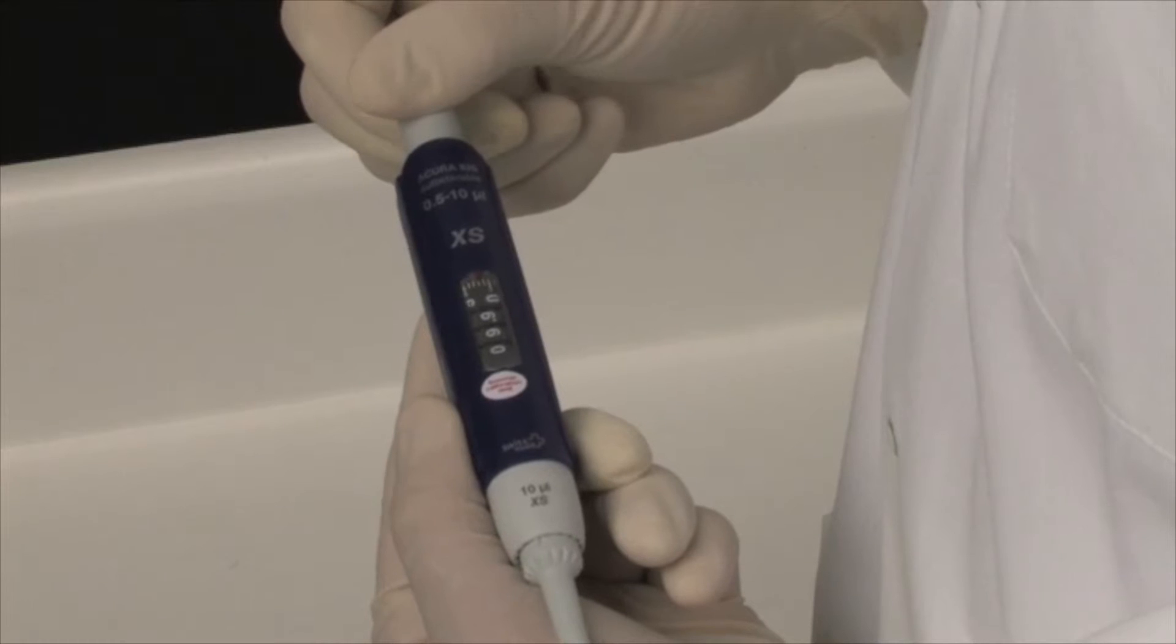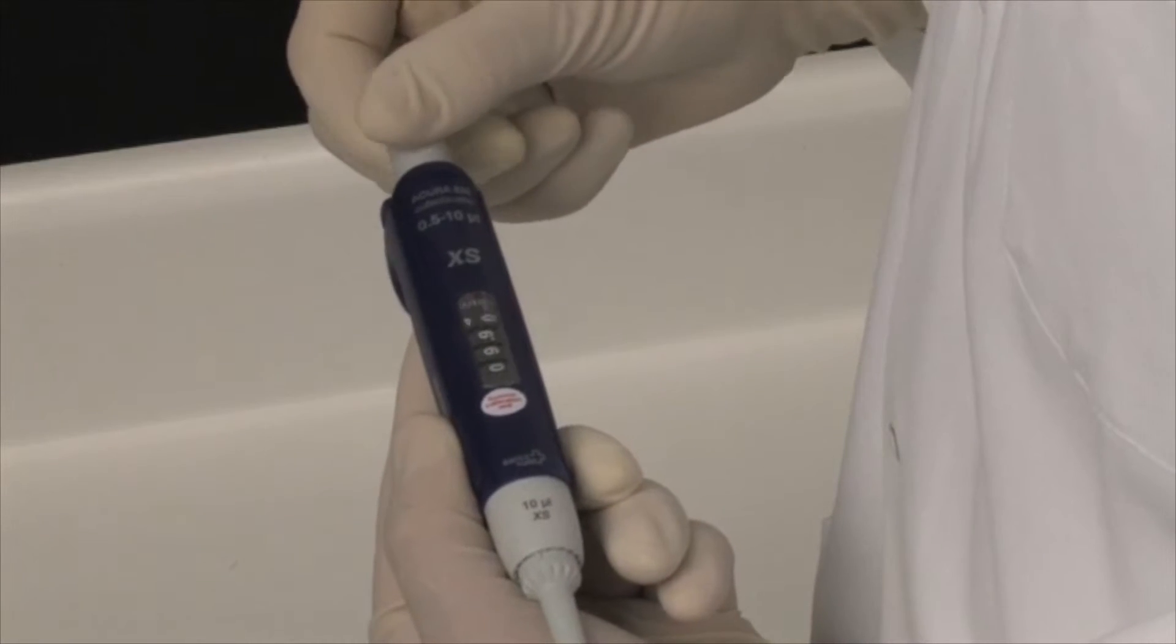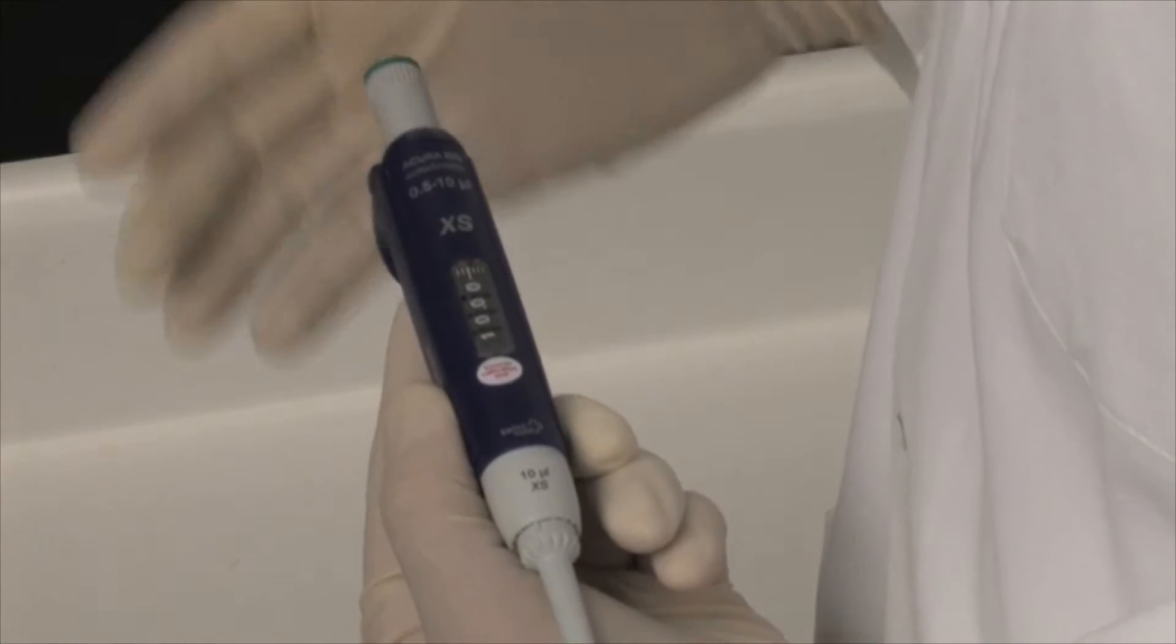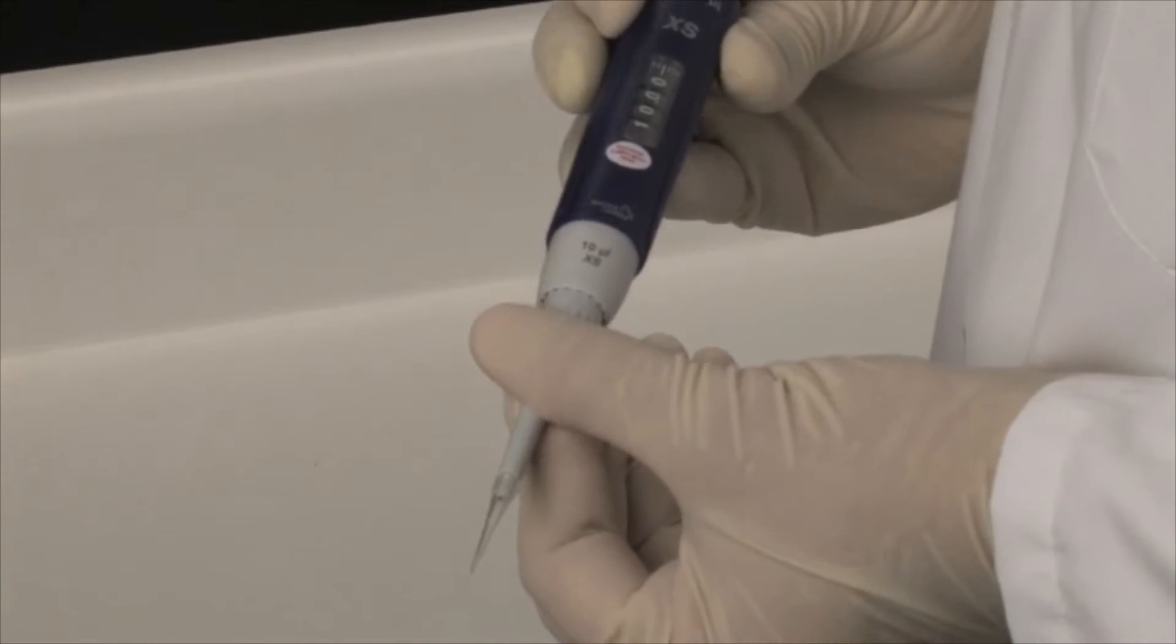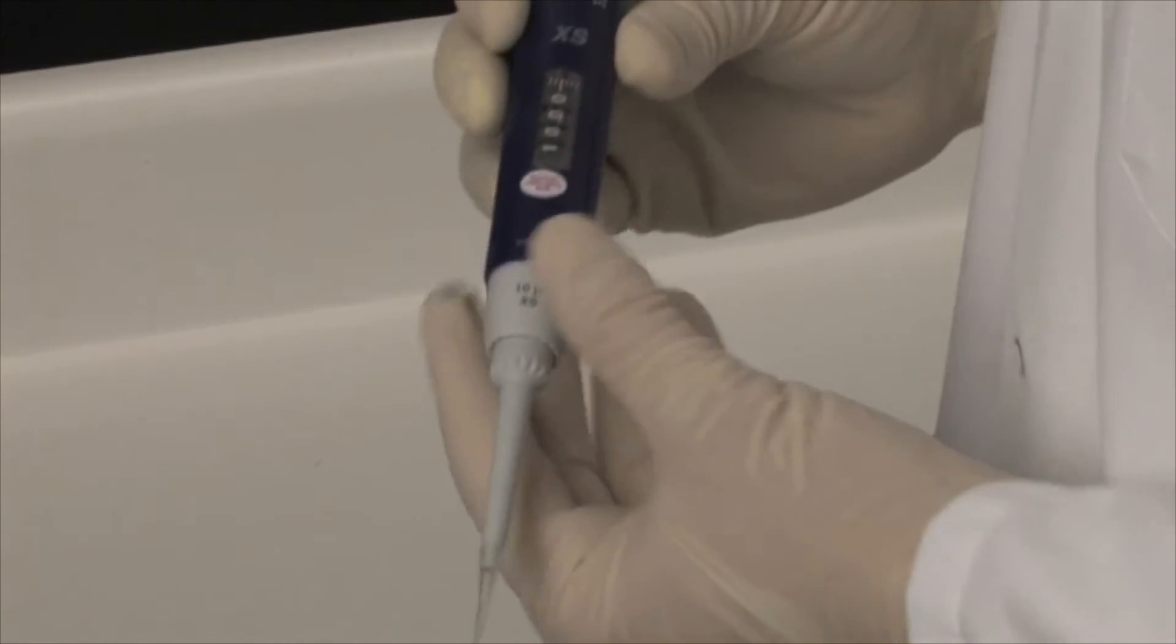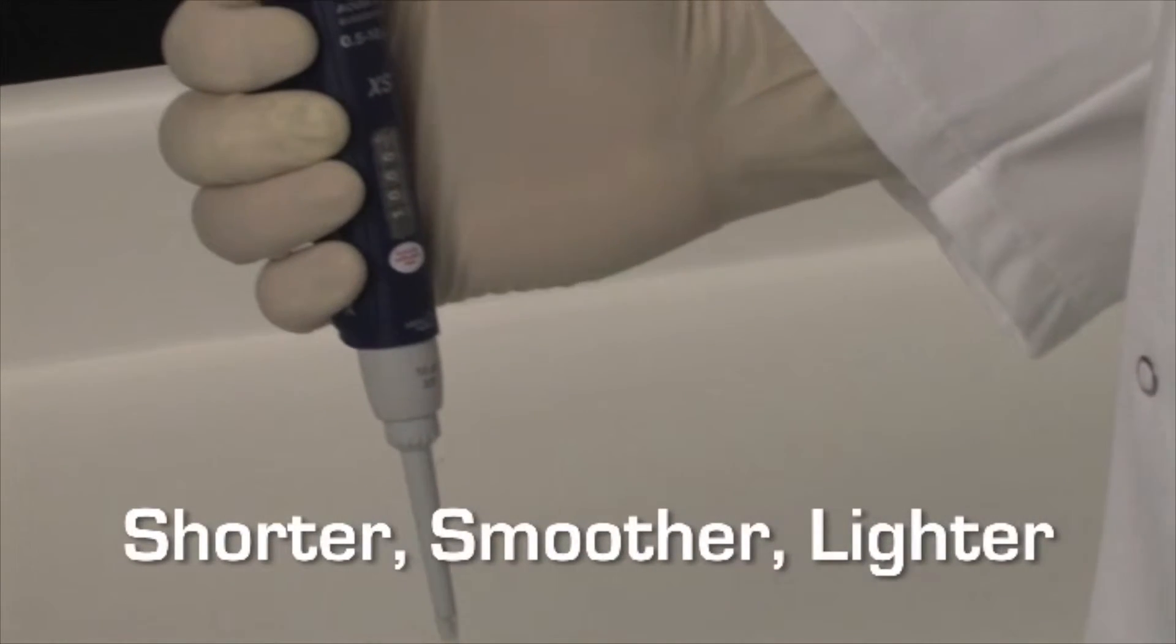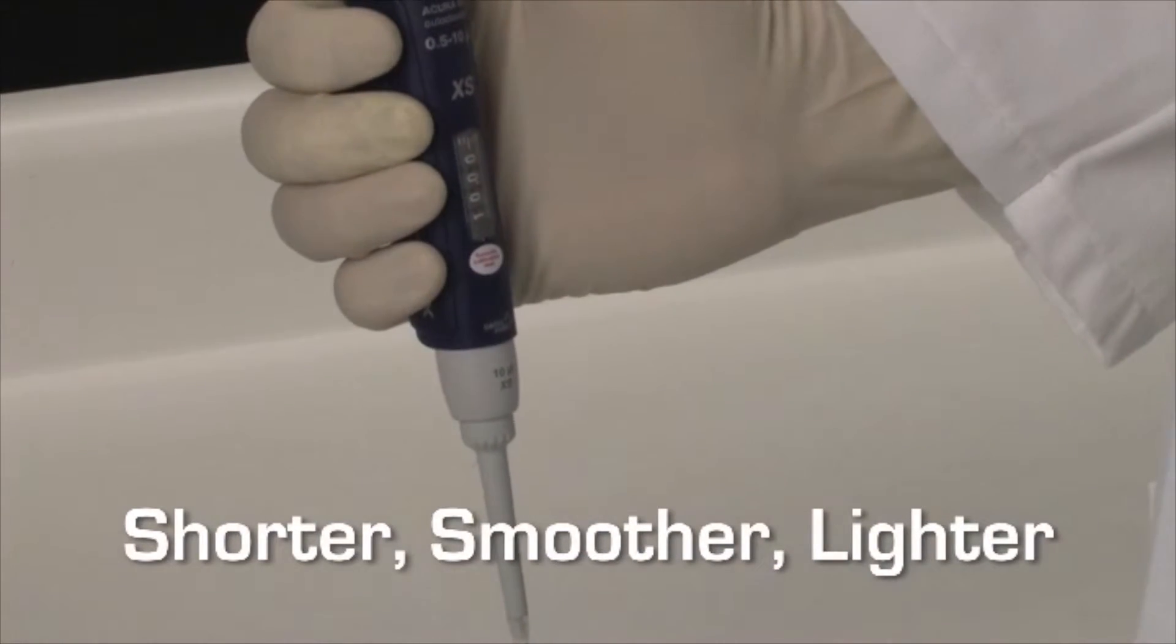While providing all of the standard features of the Acura manual line of pipettes, including precise setting and checking volumes, as well as user-friendly tip adjustment to accommodate a variety of tips, the 826XS is shorter, smoother, and lighter.